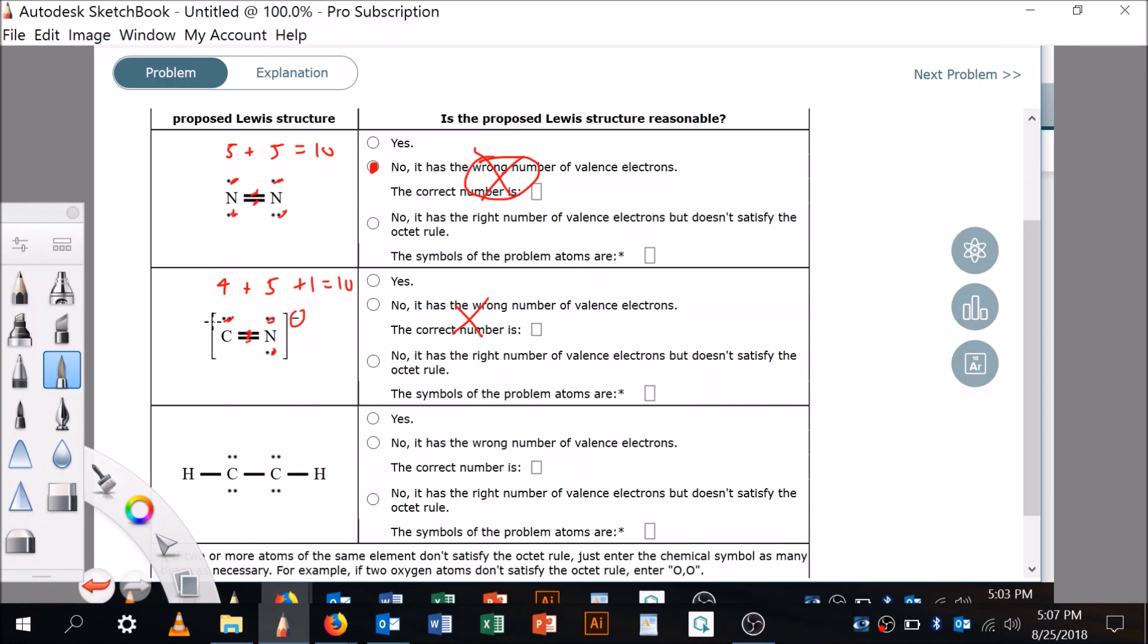But are they in the right place? All right. So it looks like there's 2, 4, 6. No, no, no. This is not. That carbon does not have its octet satisfied. Does nitrogen have its octet satisfied? Yes, yes. So carbon is the problem.